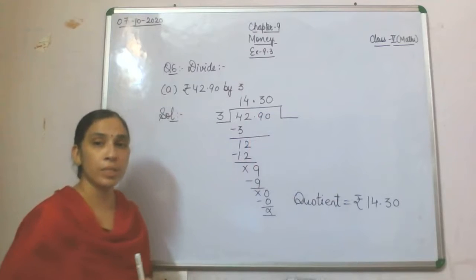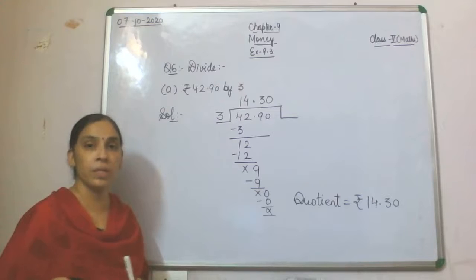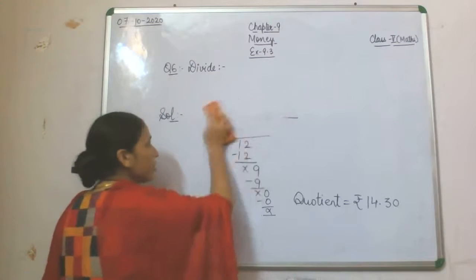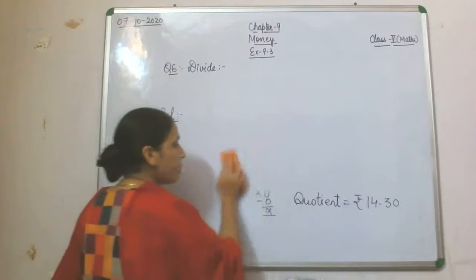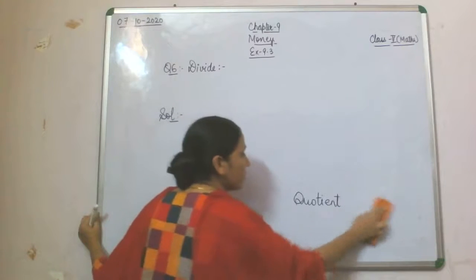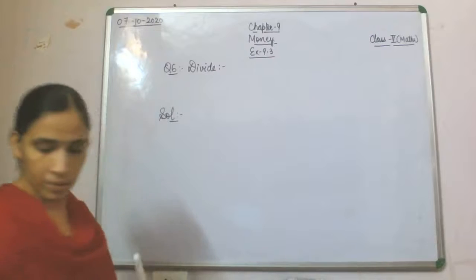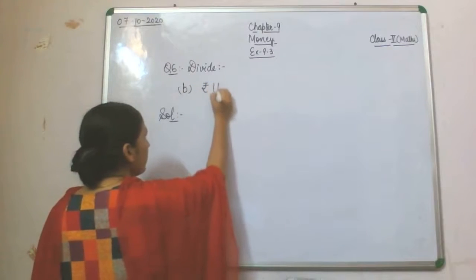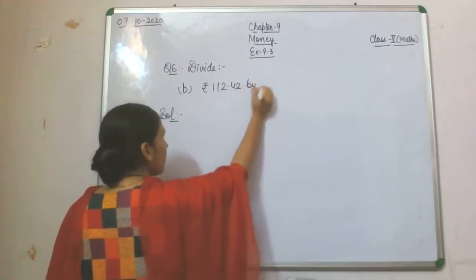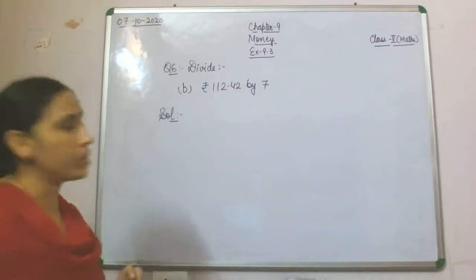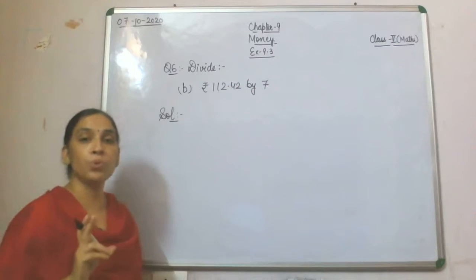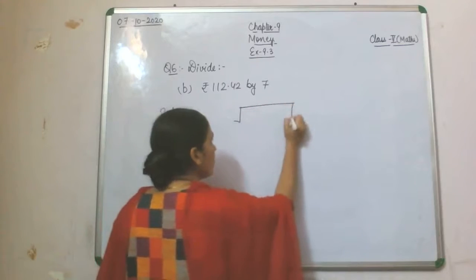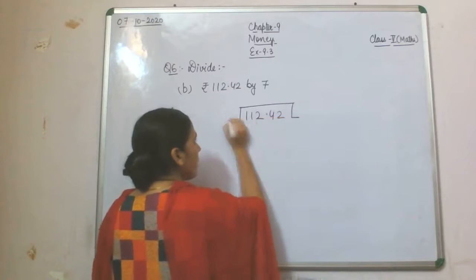I hope the concept and method of how to do division of rupees and paisa is clear. Now we will take the next question. Part B: Rupees 112 and 42 paisa divided by 7. Here you have to divide rupees 112 and 42 paisa by 7. You will write it in the form of division and then start. 1 is smaller, so we take 2 places — 11. 7 ones are 7. 11 minus 7 leaves 4 remaining. 2 will get down. 7 sixes are 42, nothing remaining. Now we got the decimal point, which will go into the quotient.